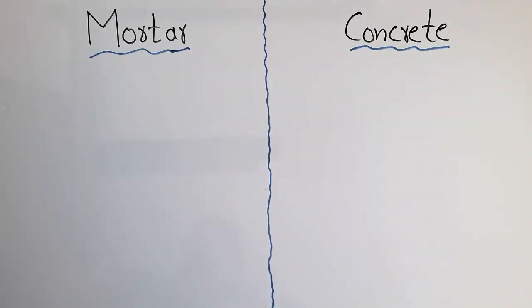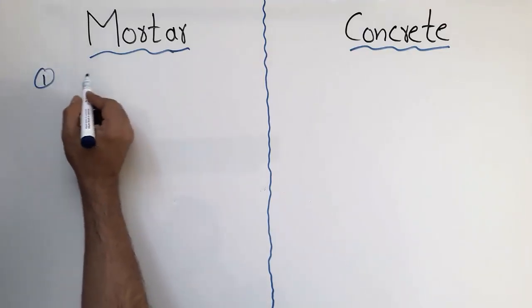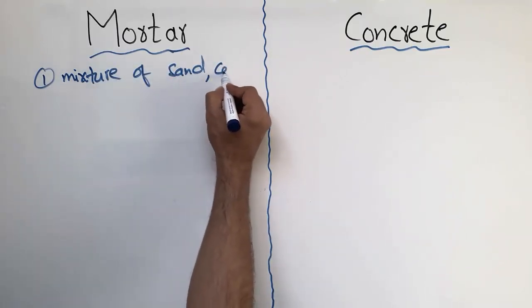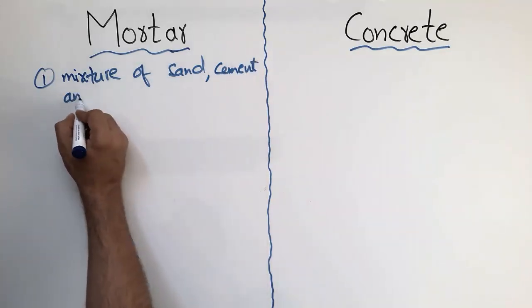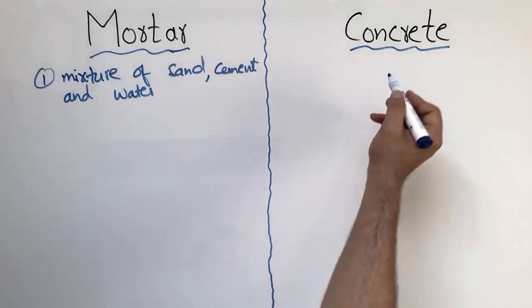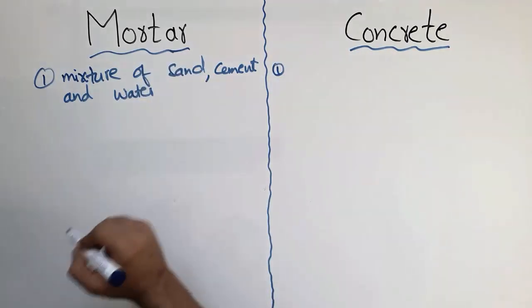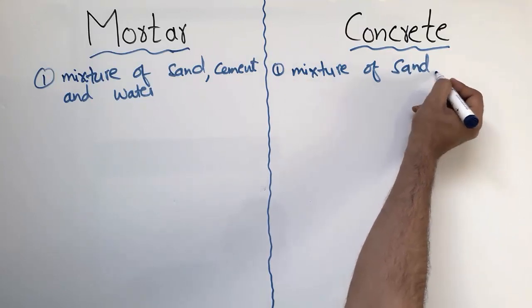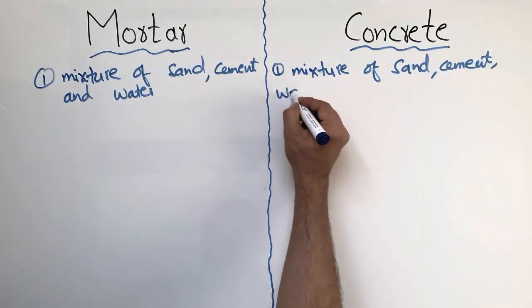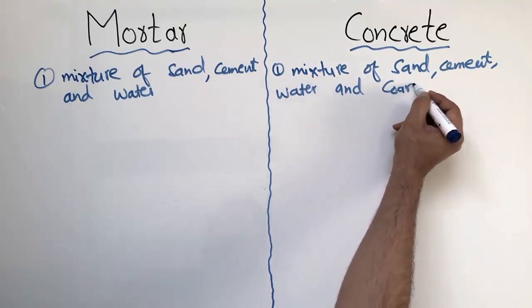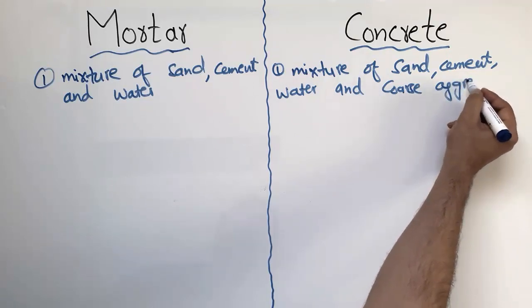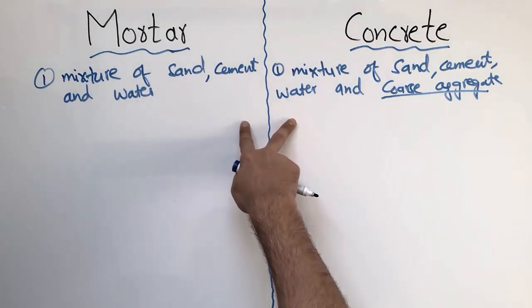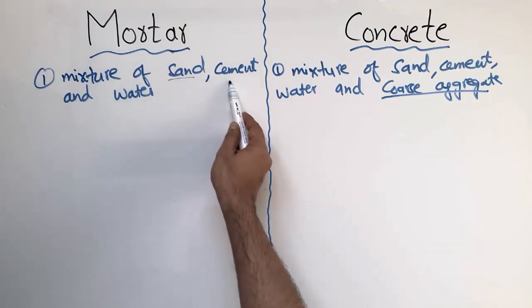The first difference between these two materials is their composition. Mortar is a mixture of sand, which is a fine aggregate, cement, and water. The coarse aggregate, which is not present in the case of mortar, makes the key difference in composition between these two materials.